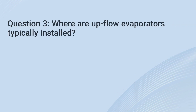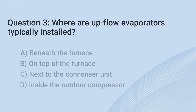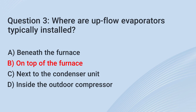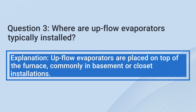Question 3: Where are upflow evaporators typically installed? a. Beneath the furnace. b. On top of the furnace. c. Next to the condenser unit. d. Inside the outdoor compressor. The correct answer is b: On top of the furnace. Explanation: Upflow evaporators are placed on top of the furnace, commonly in basement or closet installations.